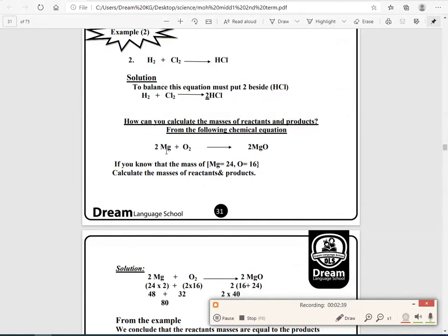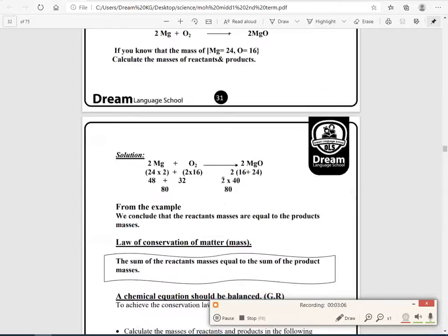Now, how can you calculate the mass of the reactant in the product from the following chemical equation? You have to note that for each element there is a mass number, or the atomic mass. Like in this example, 2Mg plus O2 equals 2MgO. If you know that the mass of Mg is 24 and the mass of oxygen is 16, so calculate the mass of the reactants and the products.